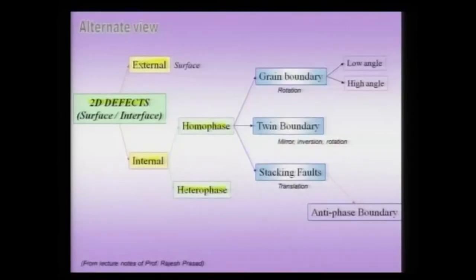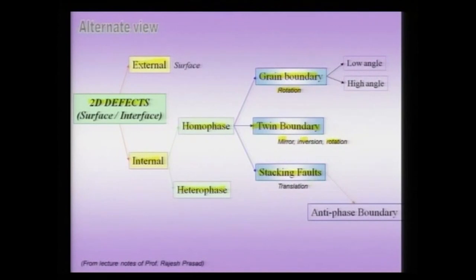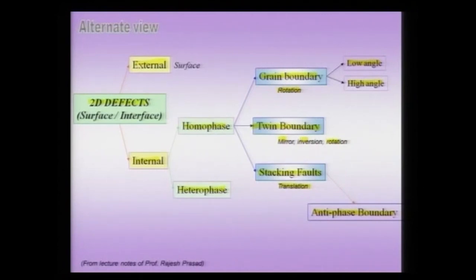Homophase boundaries can be grain boundaries, twin boundaries, and stacking faults. There are special things which characterize these kind of boundaries: for instance, a grain boundary is characterized by rotation, a twin boundary is characterized by its association with mirror inversion or rotational symmetry, and a stacking fault is associated with a translation vector. There are special cases of stacking fault which are the anti-phase boundaries. Grain boundaries themselves can be low angle or high angle, and the reason for such a classification will become very clear once we discuss the structure of these low angle grain boundaries.